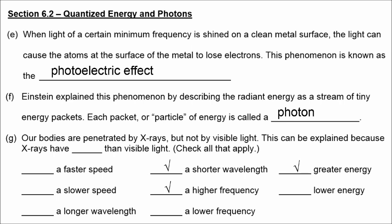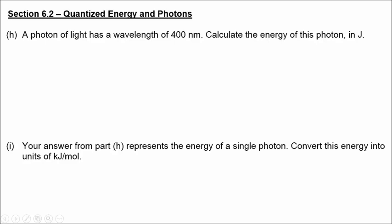Note that x-rays don't have a faster speed — they travel at the same speed as visible light, the speed of light. Letter H asks us to calculate the energy of a photon that has a wavelength of 400 nanometers. First, let's convert nanometers into meters: 1 meter equals 10 to the 9th nanometers, so 400 nm equals 4 times 10 to the negative 7 meters. That is our wavelength.